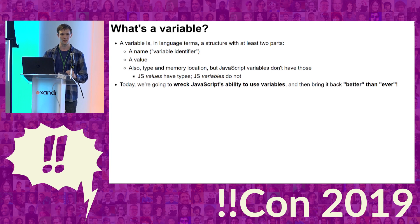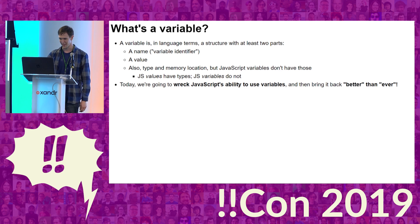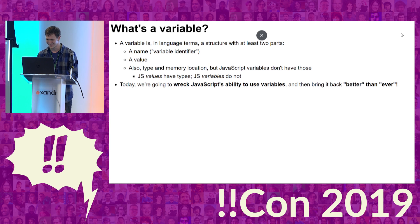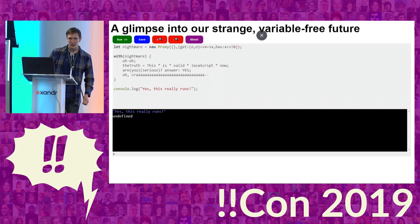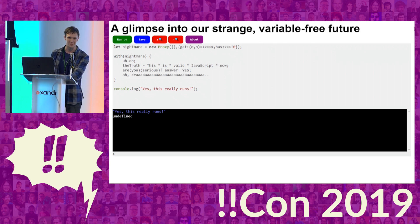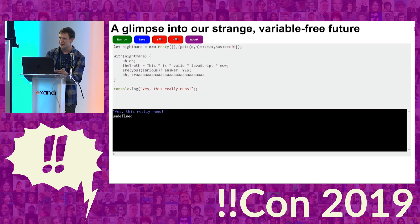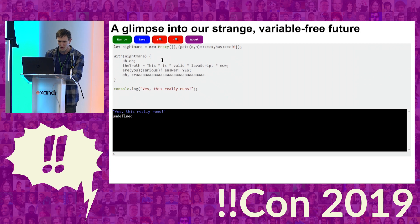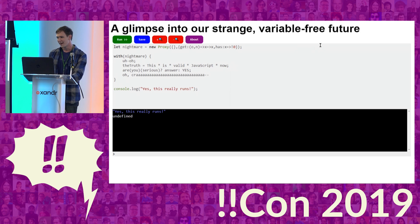Today we're going to wreck JavaScript's ability to use variables and then bring it back better than ever. I have some code up here in this REPL, and if you know JavaScript, you might notice something a little bit strange about it — it doesn't seem to make any sense whatsoever. Specifically, I'm using variable identifiers that I haven't really seemed to define anywhere. So we're going to get into how that's possible.